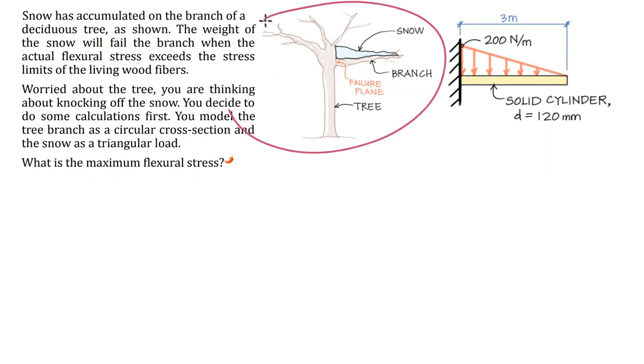Here is the premise. We have a tree. It's the middle of winter and it's been snowing. Snow has been accumulating on this branch and you're worried that due to the weight of the heavy snow, we're going to get a flexural failure in the tree fibers right here at that failure plane. What you decide to do is before you go outside to knock the snow off of the tree and potentially save the branch from being ruptured, you go ahead and set up analysis models.